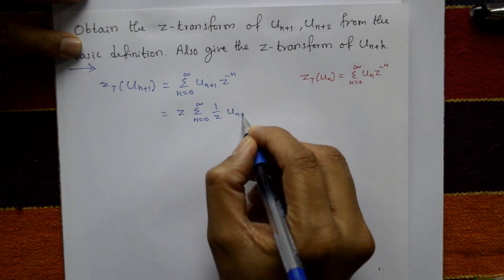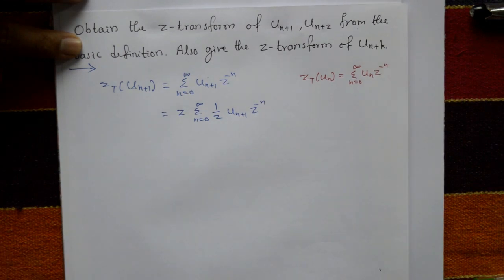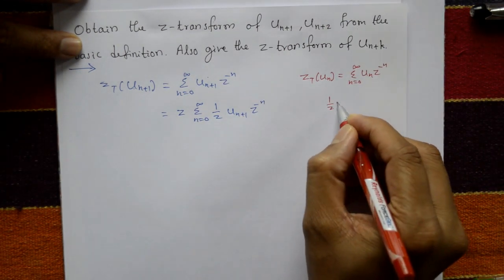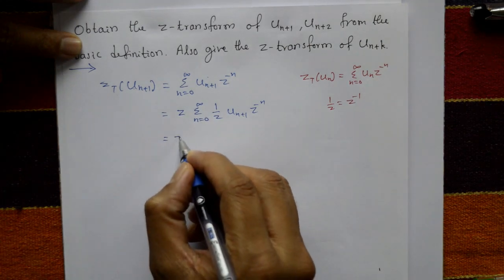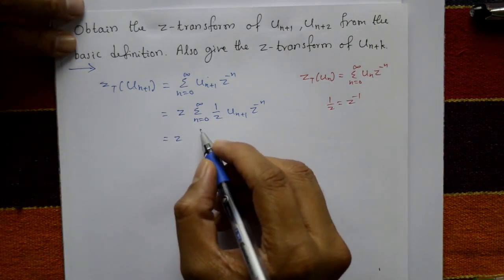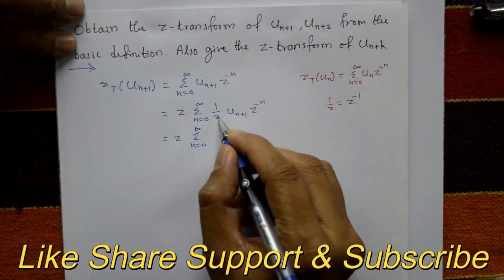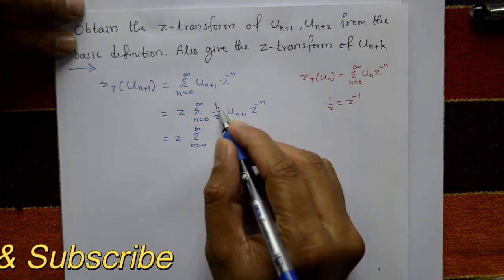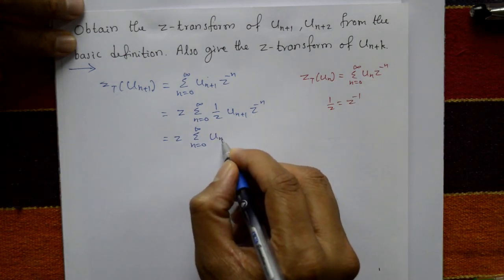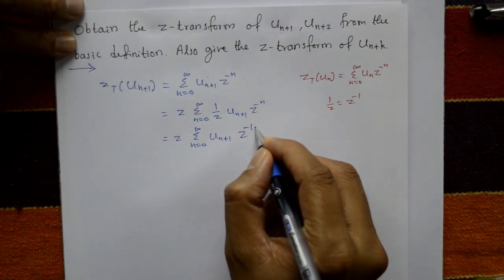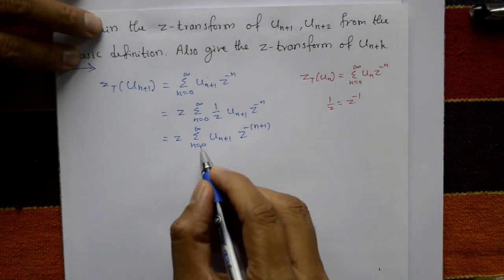Multiplying by Z and dividing by Z: 1/Z means Z raised to minus 1. So we get Z into summation from n=0 to infinity, shifting the exponent in the numerator — Z raised to minus 1 and Z raised to minus n gives u(n+1) times Z raised to minus (n+1).